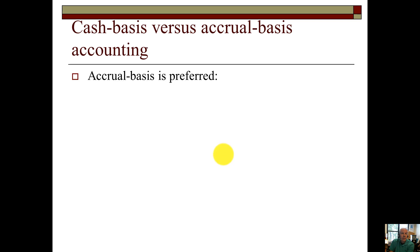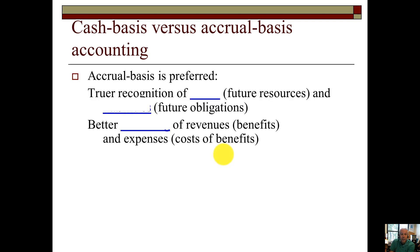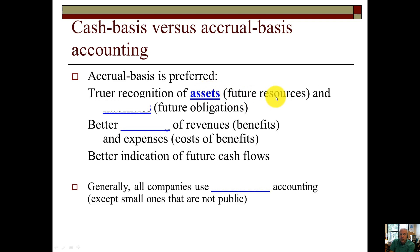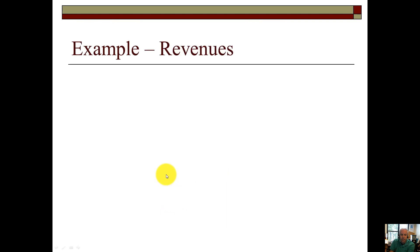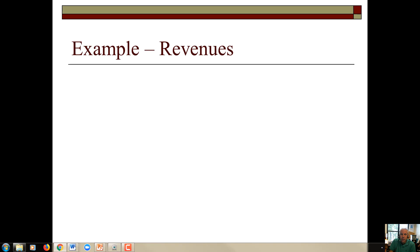So we know that accrual basis is the preferred method of accounting because it gives us a truer recognition of assets, which are known as future resources, and our liabilities, which are our future obligations. And it provides a better matching of revenues — which are the benefits — and expenses — which are the associated costs of the benefits — and it provides a better indication of future cash flows. Generally all companies must follow accrual basis accounting, except small ones that are not publicly traded. Well, this concludes our video today. I hope this helped you to differentiate between cash basis accounting and accrual basis accounting under generally accepted accounting principles. Thanks for listening. Have a great day.